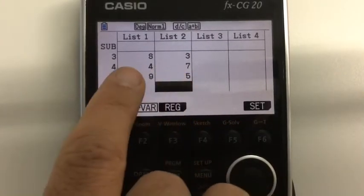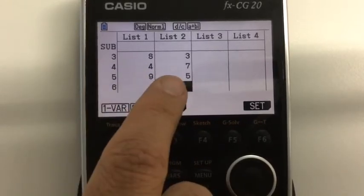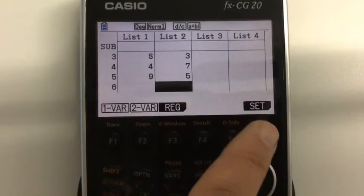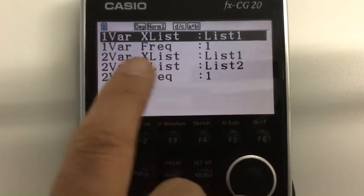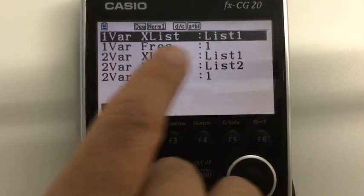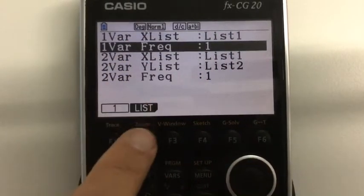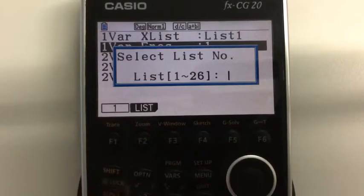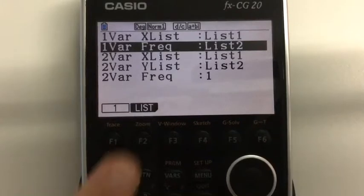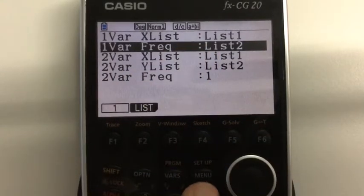Well, again, we can do one variable calculations on this. That's absolutely fine. But now we need to tell it that it's getting the frequencies from this list. So we're going to go into the settings. And here we can see that it's taking the X values from list 1, but it's taking the frequencies all as being 1. If I scroll down, I can change that to take it from list 2. And there's the statement that it's taking the frequencies from list 2. Press execute again.